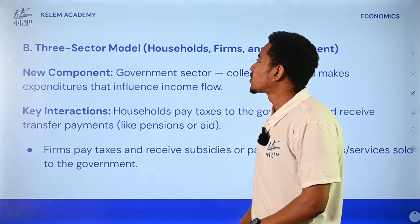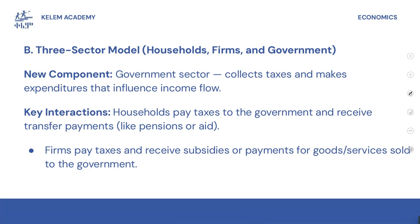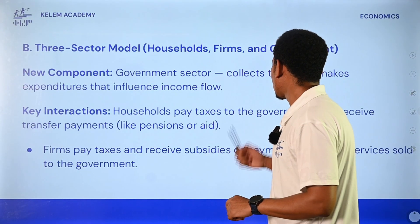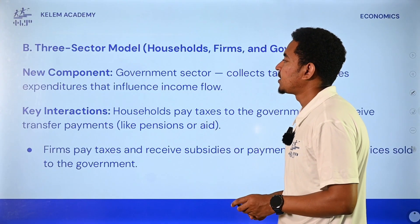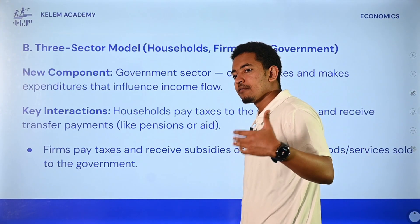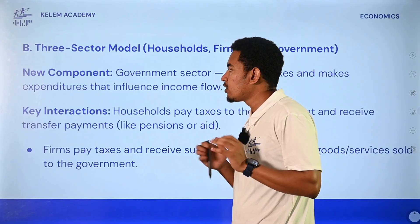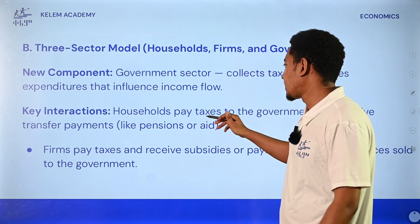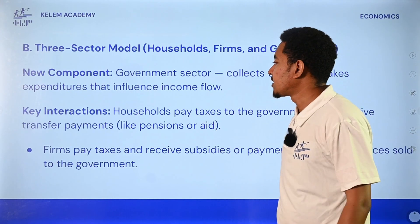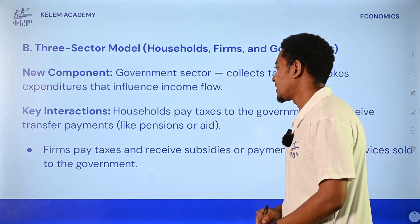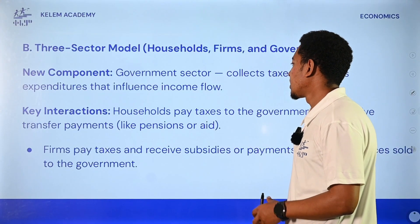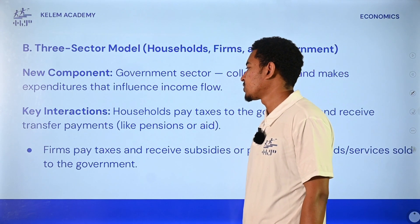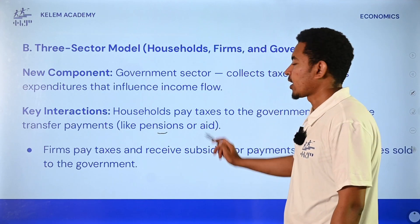There are three sectors involved in the government. The new component is the government sector that collects tax and makes expenditure that influences income flow. The key interaction: households pay tax to the government and receive transfer payments from the government. They pay tax to government because they receive transfer of payment.